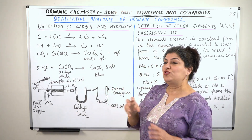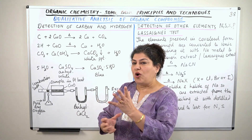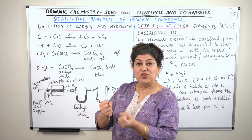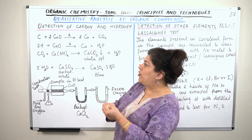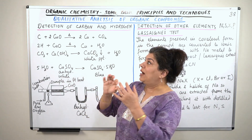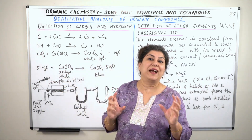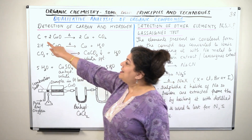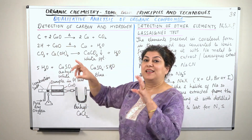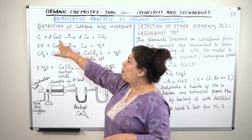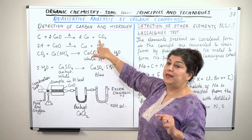To detect the presence of carbon and hydrogen, you heat the compound with copper oxide. When you heat it with copper oxide, you actually burn it. The carbon in the compound reacts with copper oxide — carbon takes the oxygen and forms its oxide, which is carbon dioxide. Similarly, hydrogen reacts with copper oxide and gets oxidized to water.